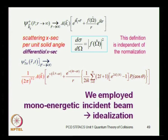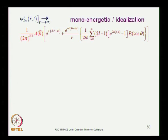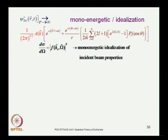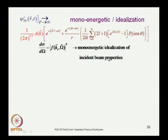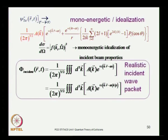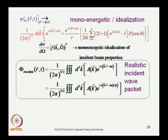We considered the energy spread to deal with certain detailed mathematical terms, but our basic formalism has been for a monoenergetic incident beam. This is a rather ideal situation. We will typically need to include the energy spread. What we found is that dσ/dΩ = |f|² is correct for the monoenergetic idealization of the incident beam, but a typical incident wave will be a wave packet in which you integrate over momentum with several wavelengths and energies present.